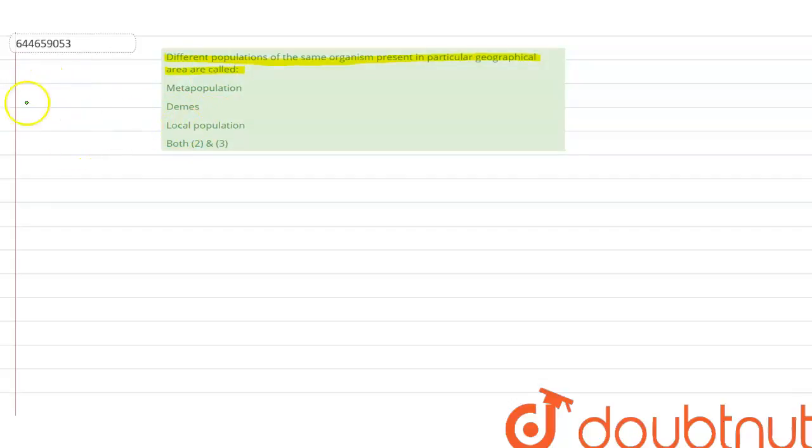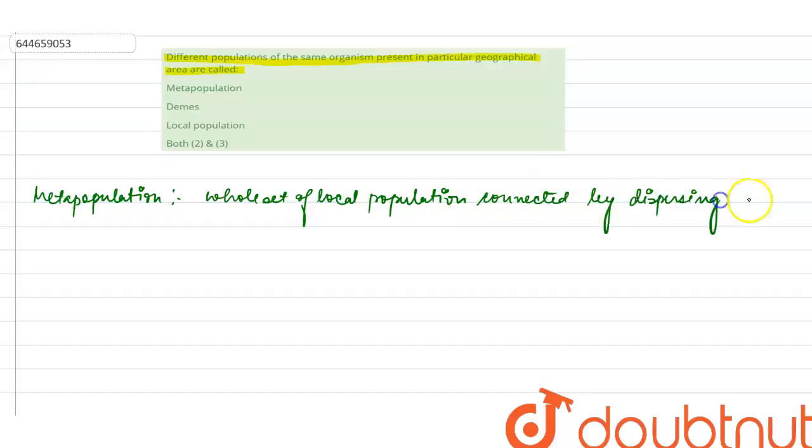The options given are metapopulation, beams, and local population. Now what is metapopulation? Metapopulation will actually be the whole set of local populations, that is, the whole set of local populations connected by dispersing individuals.